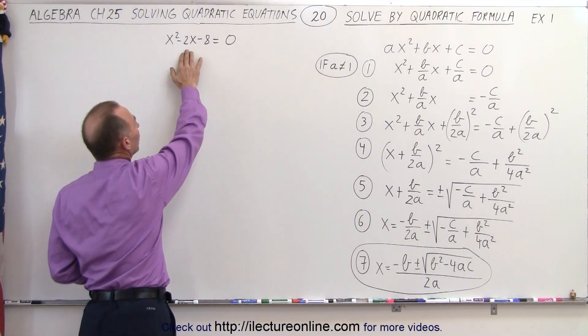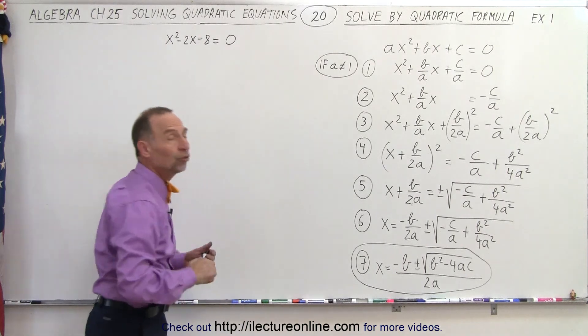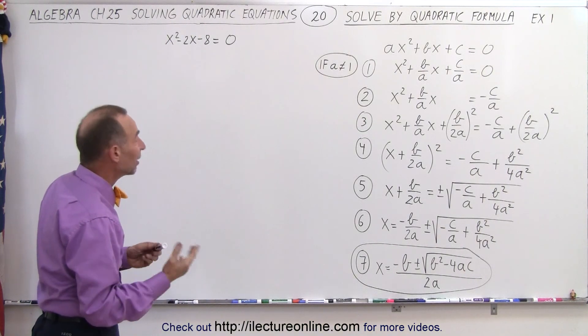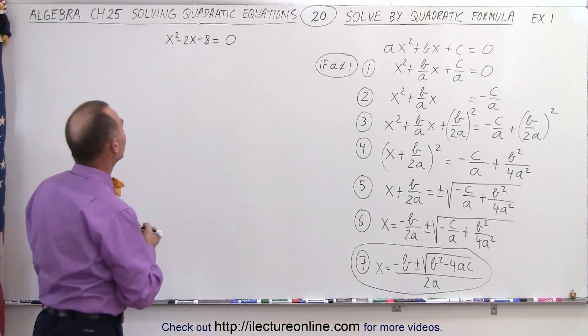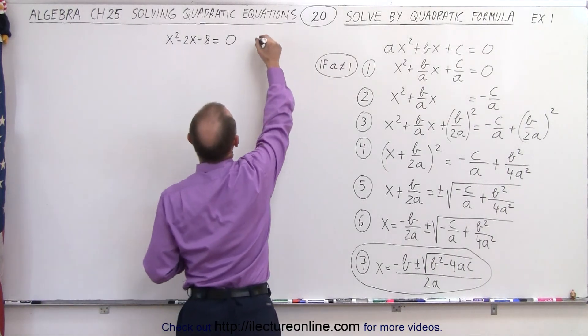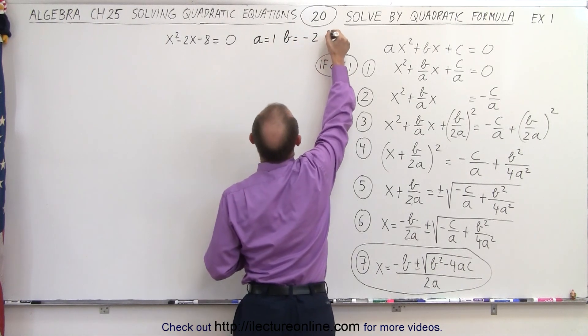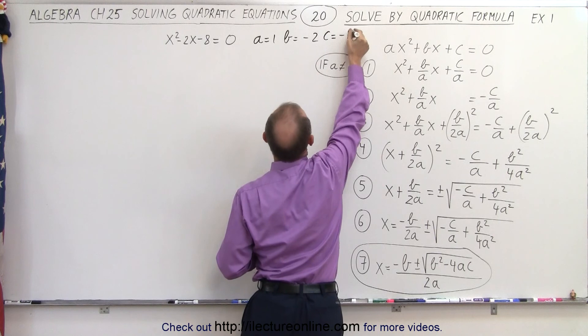Here's the quadratic equation we're going to solve using the quadratic formula. First we need to identify what A, B, and C are equal to. In this case, A equals 1, B equals negative 2, and C equals negative 8.